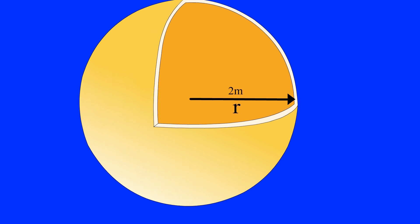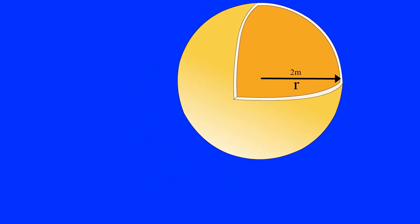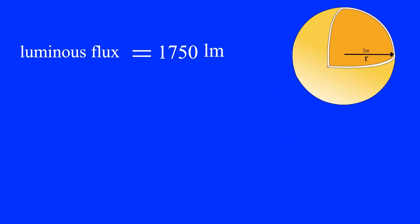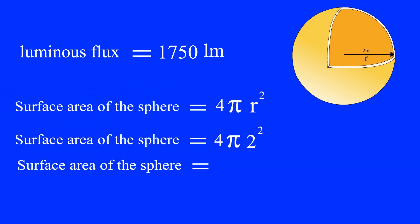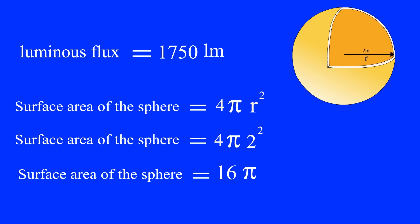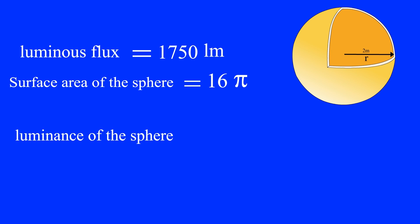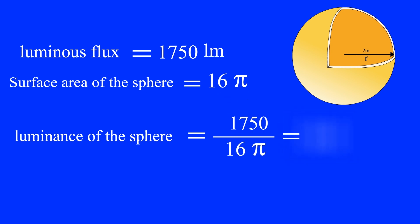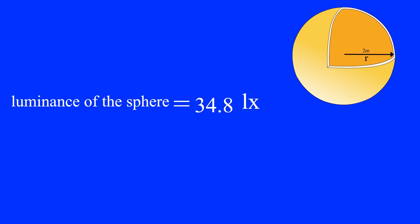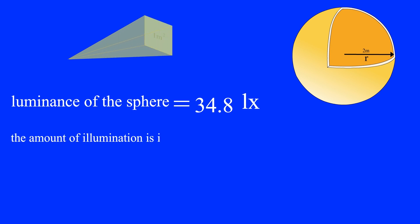If the size of the sphere surrounding the lamp increases so that the radius becomes equal to two meters, what is the amount of illumination? The total luminous flux of the lamp remains the same — one thousand seven hundred and fifty lumens — because the luminous flux depends on the lamp only. The surface area of a sphere with radius two meters becomes 16π, which is four times larger than before. Therefore, the illuminance equals 1750 divided by 16π, which equals 34.8 lux. This shows that the amount of illumination is inversely proportional to the square of the distance.